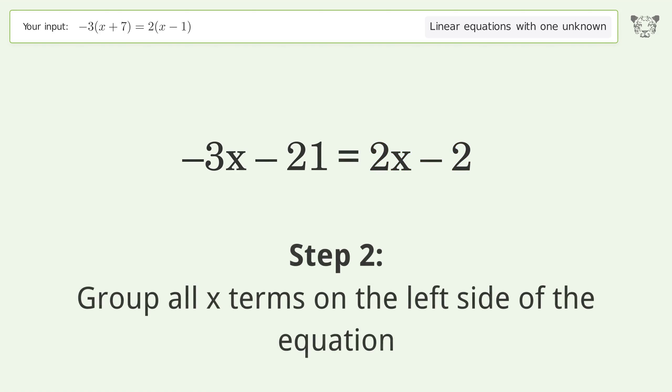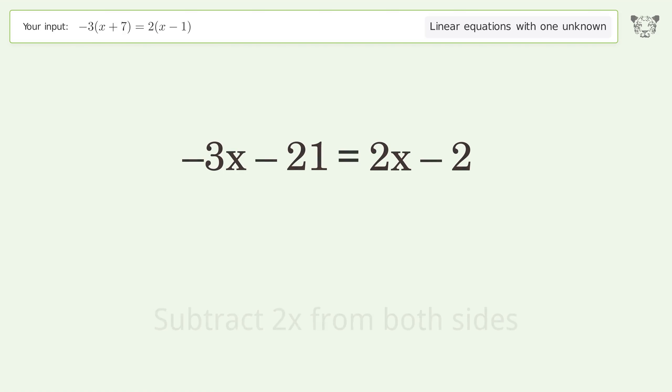Group all x terms on the left side of the equation. Subtract 2x from both sides. Group like terms. Simplify the arithmetic.